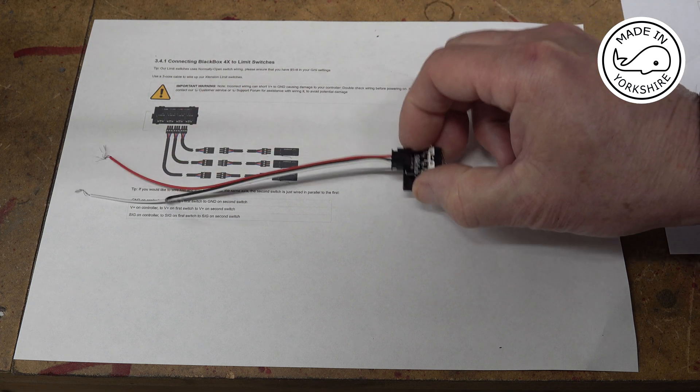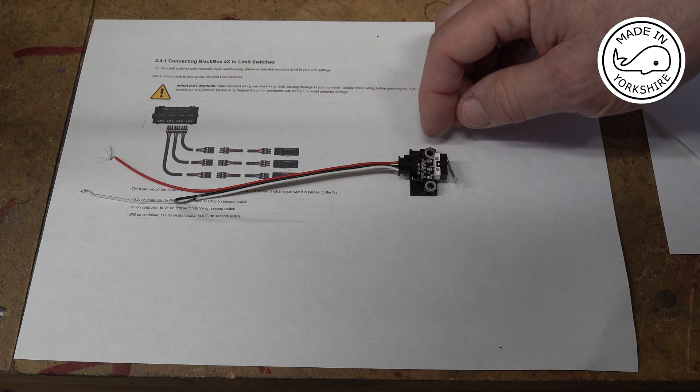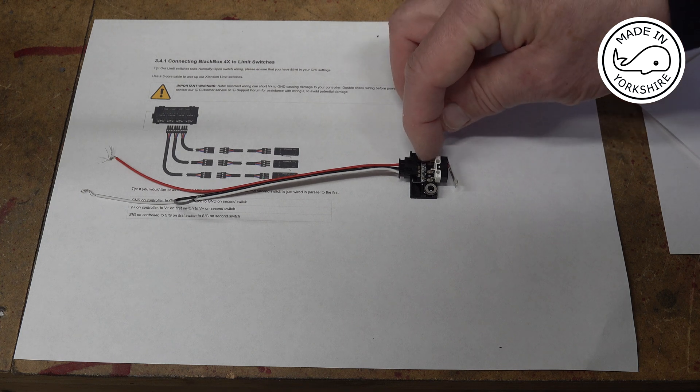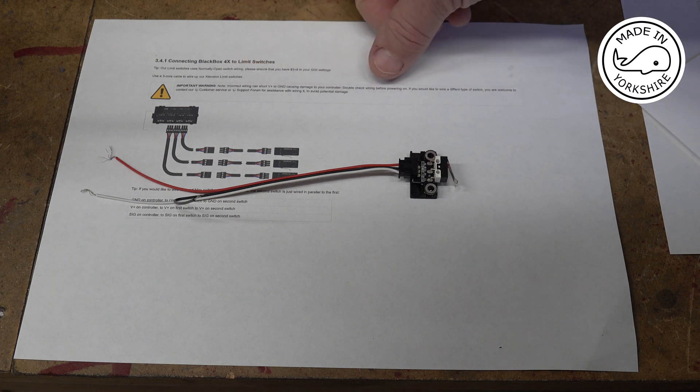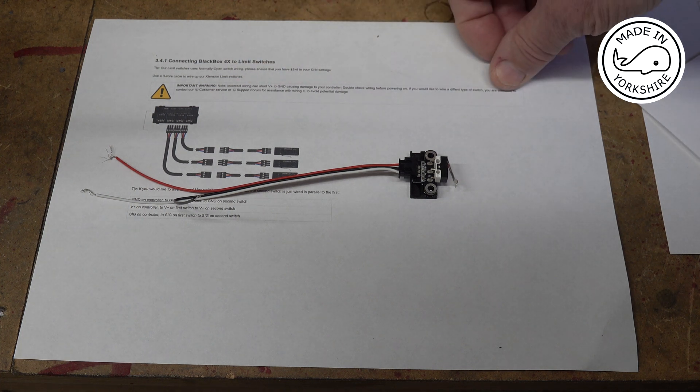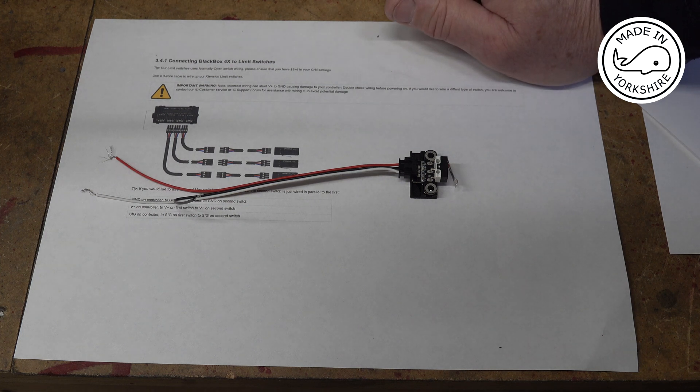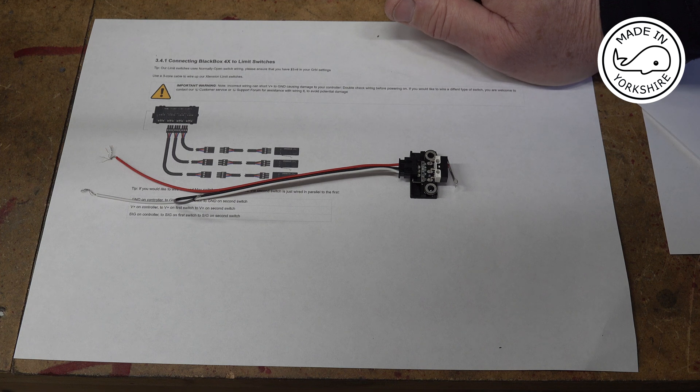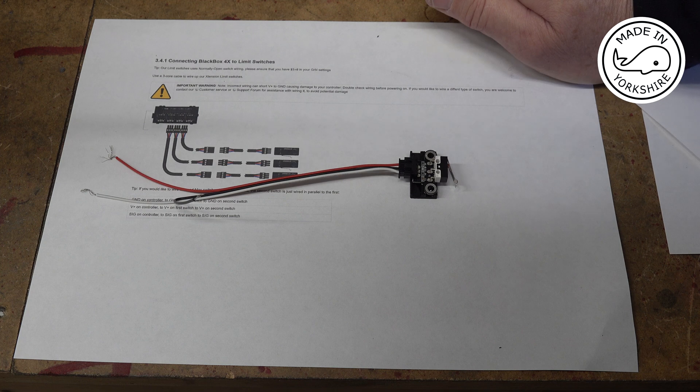But with these switches, I don't know. Would I put the plus volts to where it says here five volts? I don't know. And especially when it says that it can damage your controller if you get it wrong. I just decided on sticking with normally open and wiring them parallel. So that's what I went for.